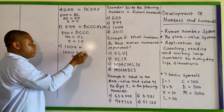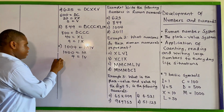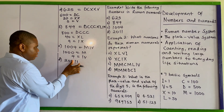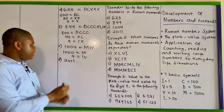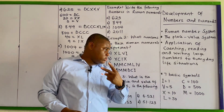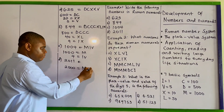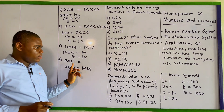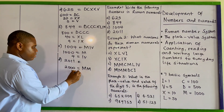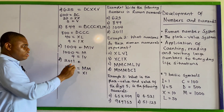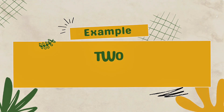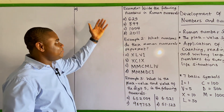The last one is 2011. For two thousand, since one thousand is M, two thousand is MM. For eleven, X is 10 and I is 1, so X plus I gives XI which is 11. So 2011 gives me MMXI. I hope you understood the first example.